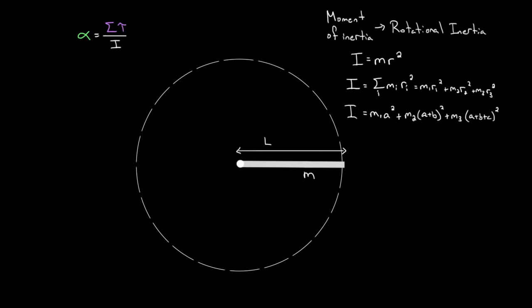The truth is you have to use calculus to derive the formula for these continuous objects — and it's fun, you can solve for these moments of inertia with integrals. If you don't know calculus, I suggest you learn it. But I'll just give you the result. We should be able to say: is the moment of inertia for this rod going to be bigger than, less than, or equal to ml²? It's got to be less than ml².